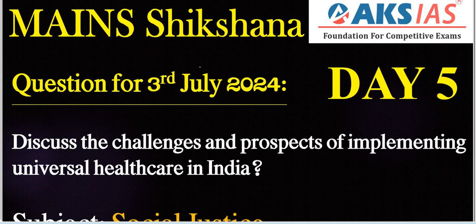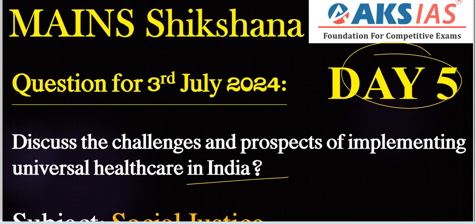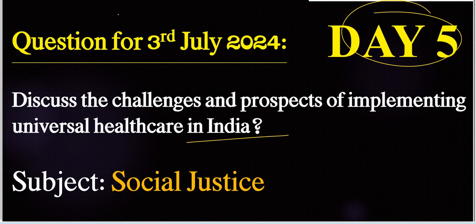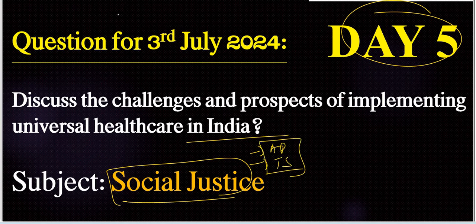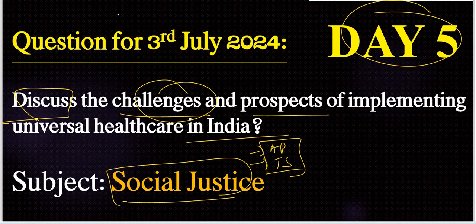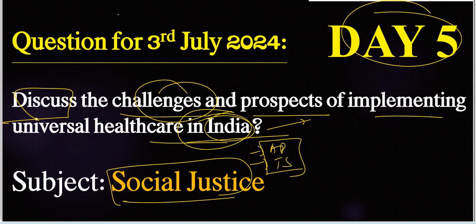For tomorrow's answer — the mains section question for 3rd July 2024, day five: Discuss the challenges and prospects of implementing universal healthcare in India. This is related to the social justice topic or subject — a very important topic in the society concept for both AP and Telangana. 'Discuss' is the question tag, 'challenges' and 'prospects' are keywords, and 'universal healthcare' is the main concept. Note: this is only in the India context — do not include the world context. Try to write your answers before 3 PM and upload them. Thank you very much and all the best.